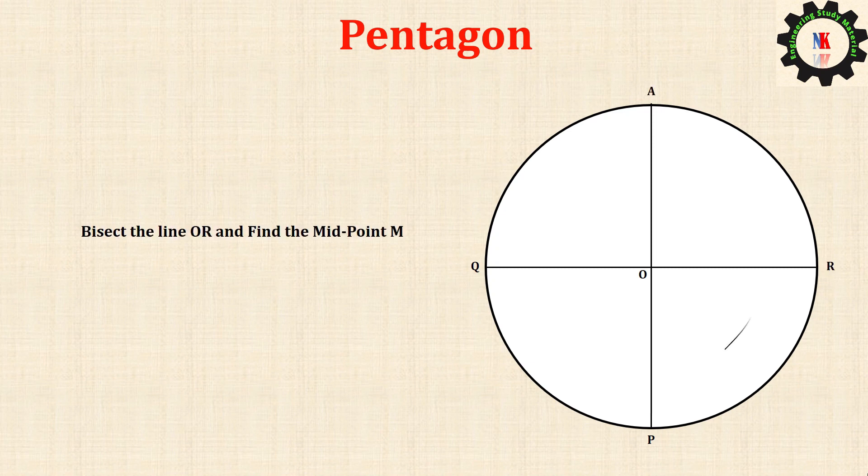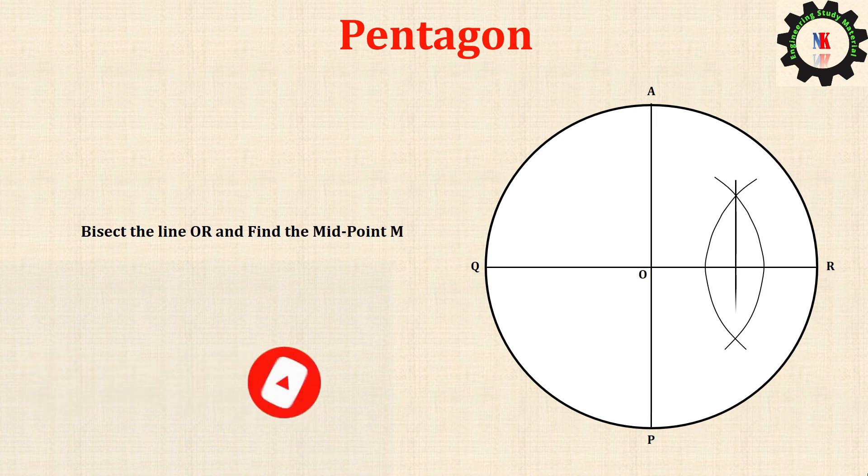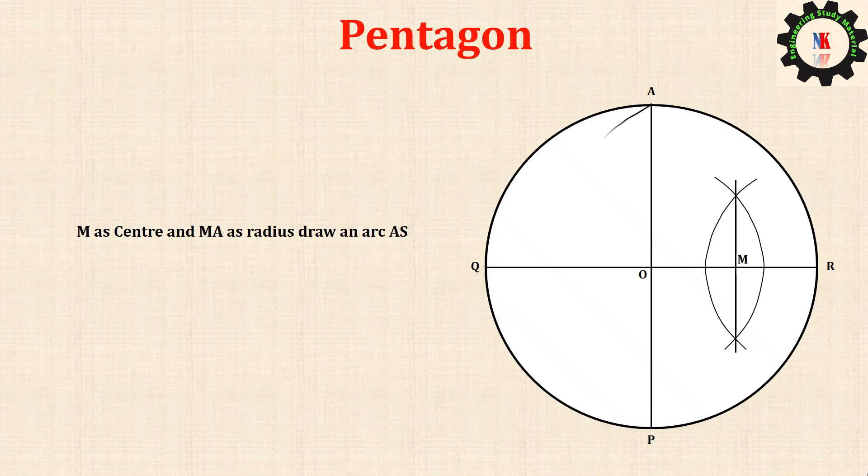Bisect the line OR and find midpoint M. M as center and MA as radius, draw an arc AS. Join AS.